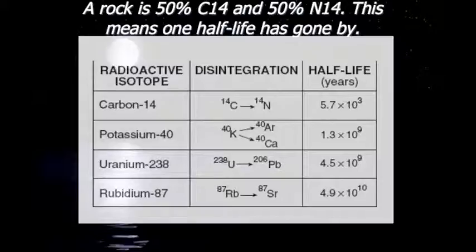This chart shows us the half-life of each radioactive isotope. Because we're talking about carbon-14, one half-life is 5,700 years. This is how we determine its age.